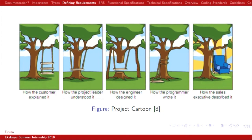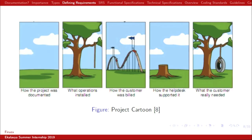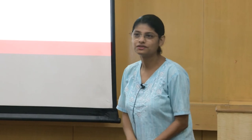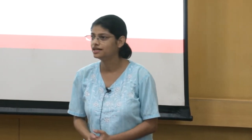This is a project cartoon. The customer explained that he requires a swing — three planks, in that fashion. The project leader understood it differently, the engineer designed it differently, the programmer wrote it differently, the sales executive described it like a sofa. How was the project documented? Zero — no documentation. The operations installed it differently, the customer was highly upset, and the help desk supported it differently. What the customer really wanted was just a tire tube on a tree. This clearly shows there is always a lack of communication between clients and developers. If we write properly, this scenario will not happen.